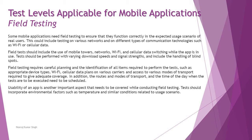Some mobile applications need field testing to ensure they function correctly in expected real-user usage scenarios. This includes testing on various networks and communication technologies such as Wi-Fi or cellular data. Field tests should include the use of mobile towers, network and Wi-Fi and cellular data switching while the app is in use, with varying download speeds and signal strength.